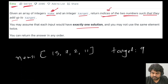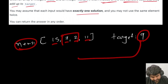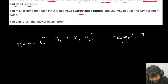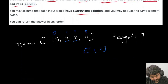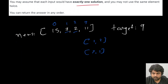Let's understand this with an example. We are given the input array with values 15, 7, 2, and 11, and the target value is 9. We can see that 7 and 2 sum up to 9. The index positions of 7 and 2 are 1 and 2, so we can return the answer as [1, 2] or [2, 1] — any order is acceptable.